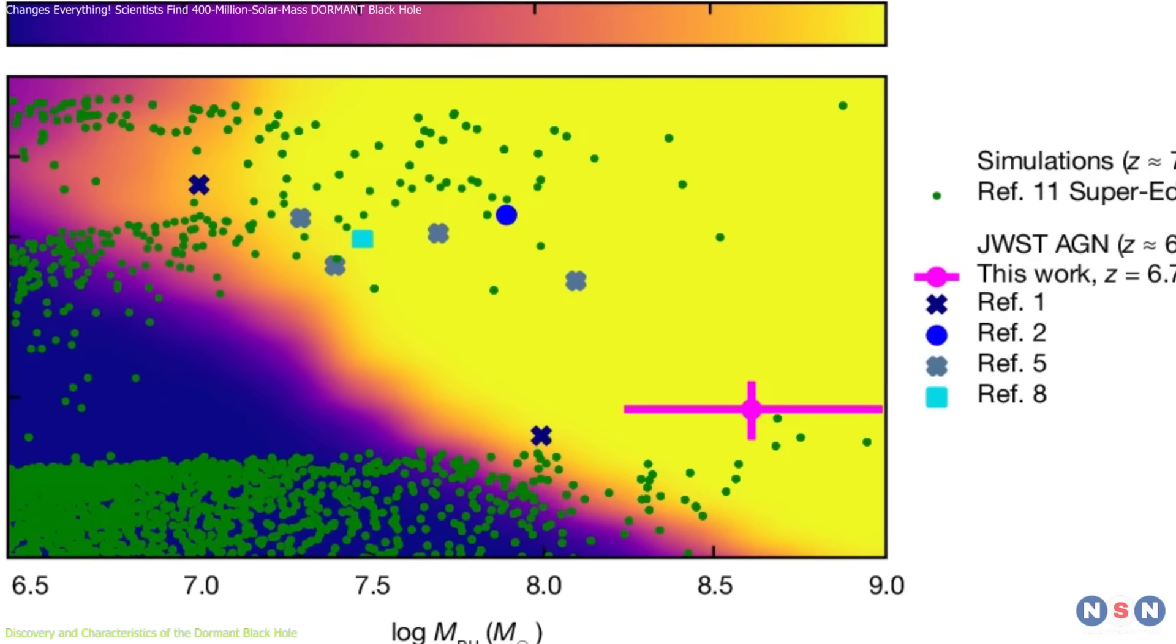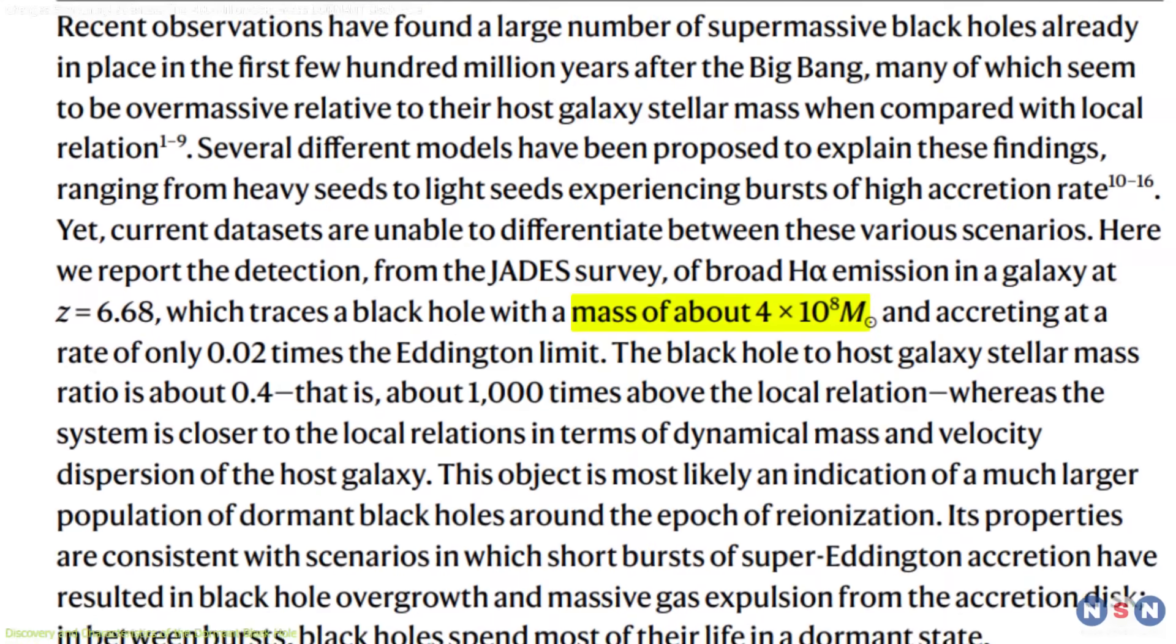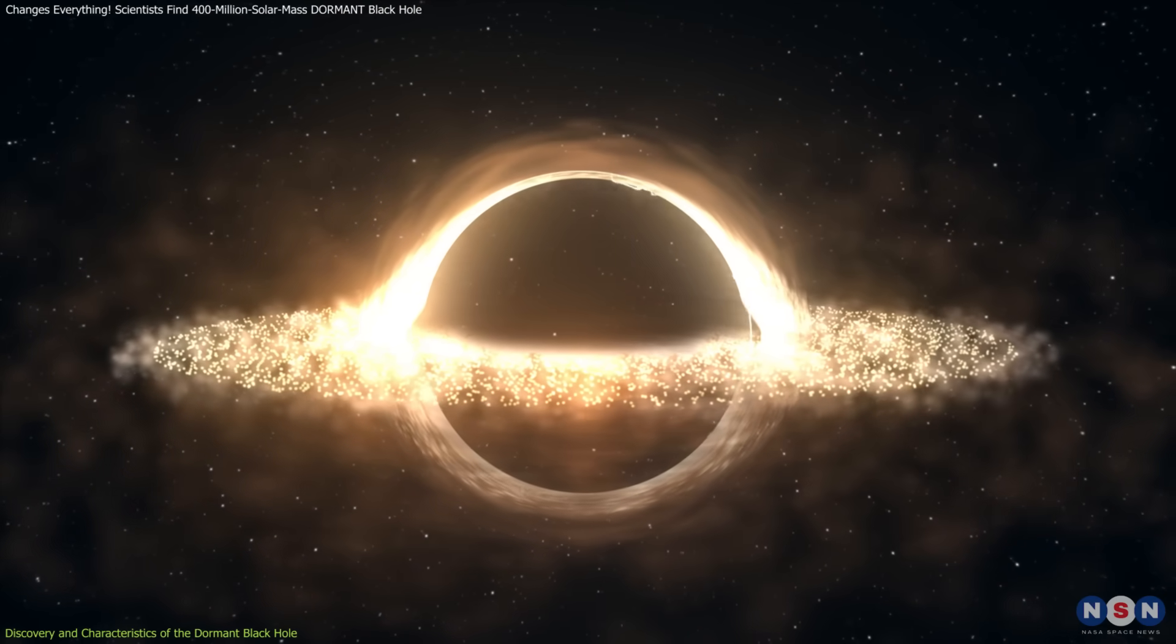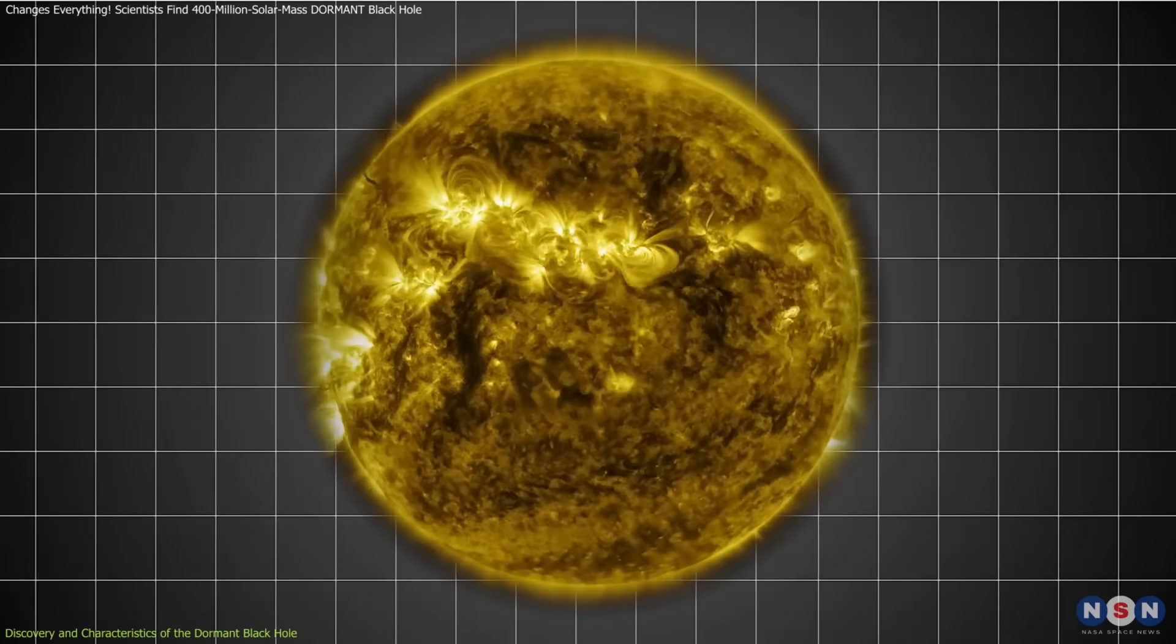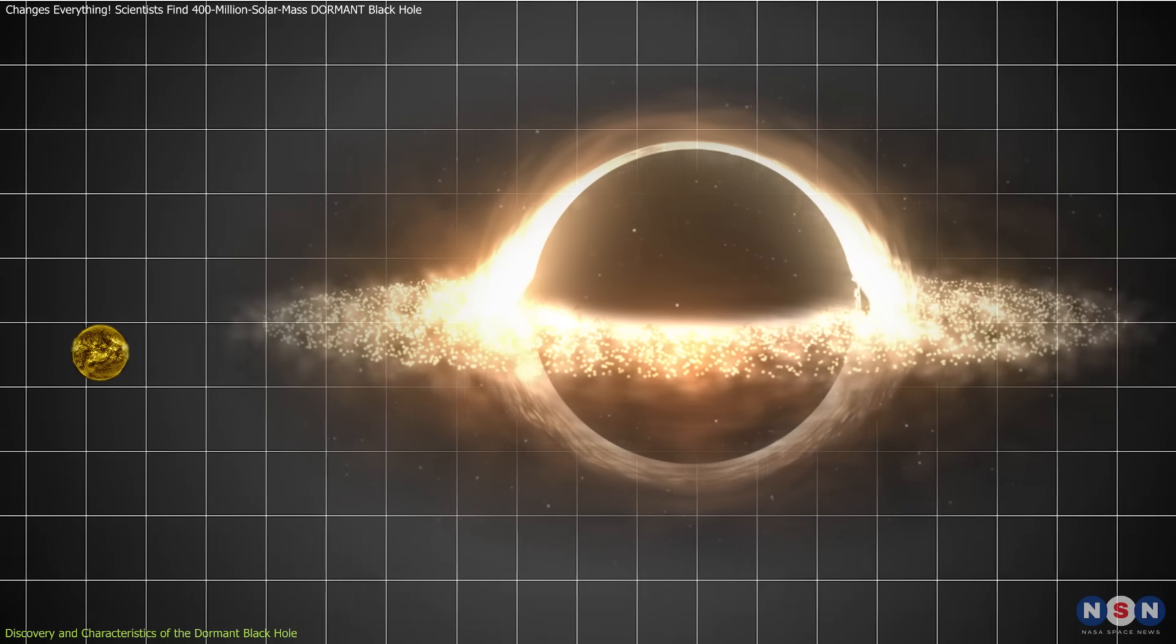Now, let's talk about the sheer scale of this black hole. It's 400 million times the mass of the sun, an unimaginable size. To put this into perspective, if our sun were the size of a marble, this black hole would be a sphere nearly three kilometers across.